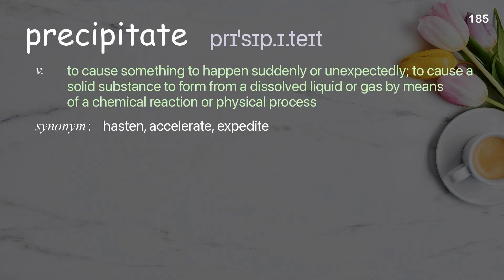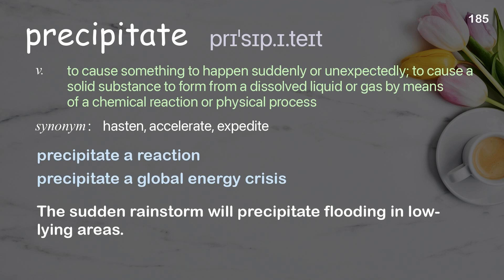Precipitate: to cause something to happen suddenly or unexpectedly; to cause a solid substance to form from a dissolved liquid or gas by means of a chemical reaction or physical process. Examples: precipitate a reaction; precipitate a global energy crisis. The sudden rainstorm will precipitate flooding in low-lying areas.